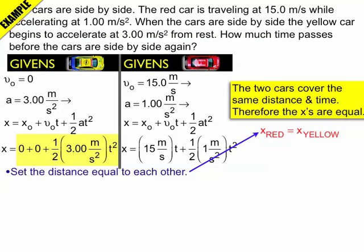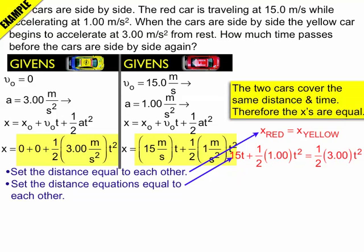So I can set these two equations equal to each other. I can set that 0 plus 0 plus 1/2 times 3 times T squared equal to 15 meters per second times T plus 1/2 times 1 meter per second squared times T squared. Now that I have them like this, I can then group like terms and set it all equal to 0.